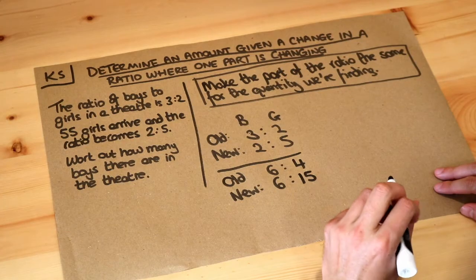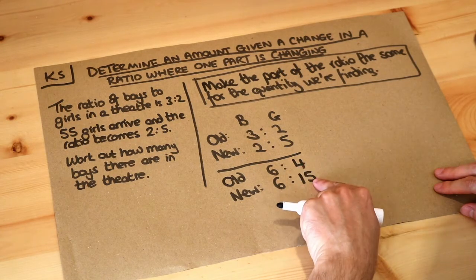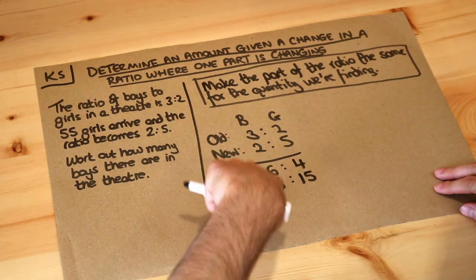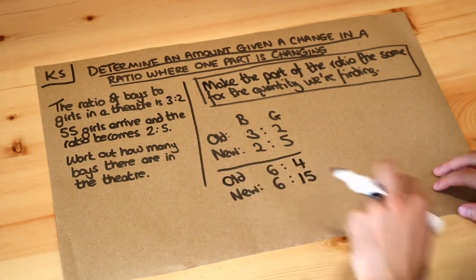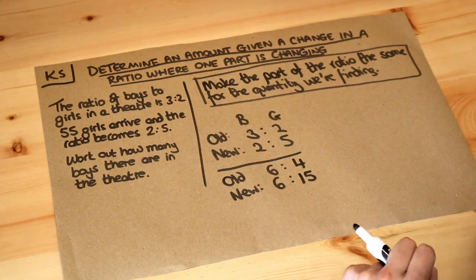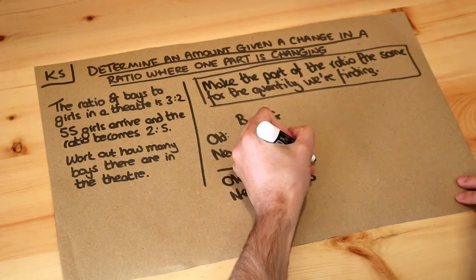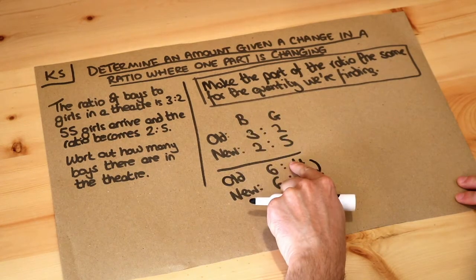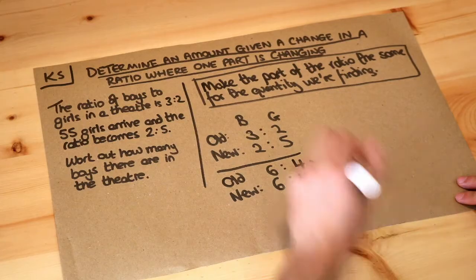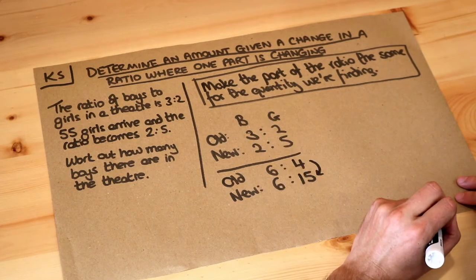Now because we had 4 parts girls before and 15 parts girls now, and because the boys are the same, these 4 and 15 are directly comparable in a way that they weren't before. So we can see the difference in parts of girls before and after is 11 parts.